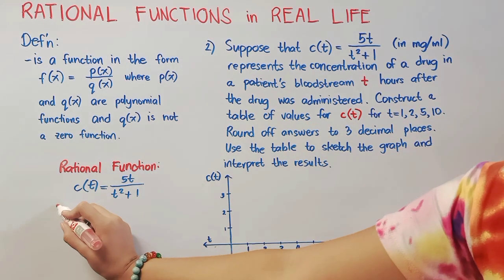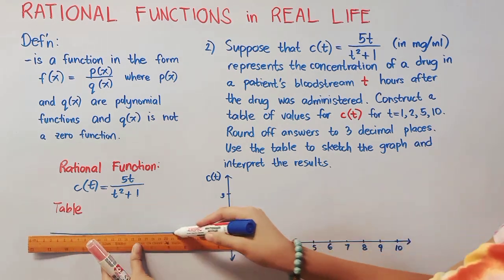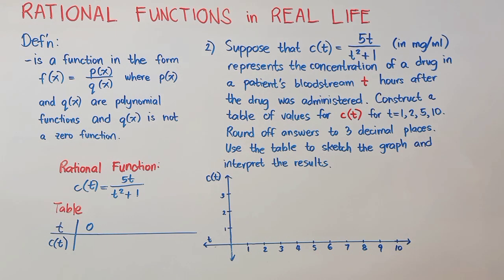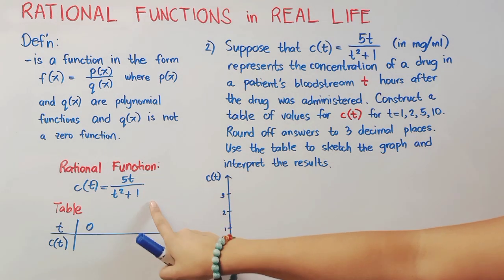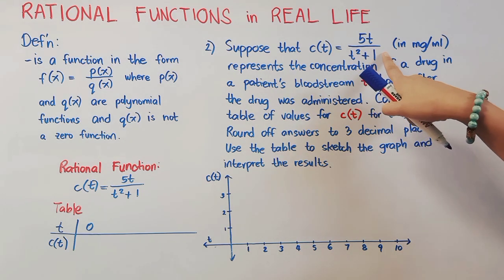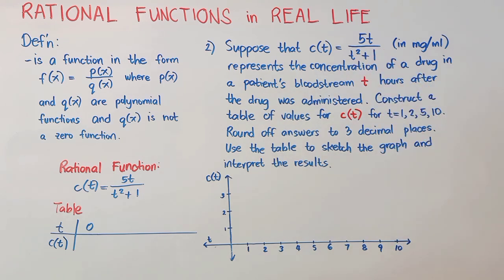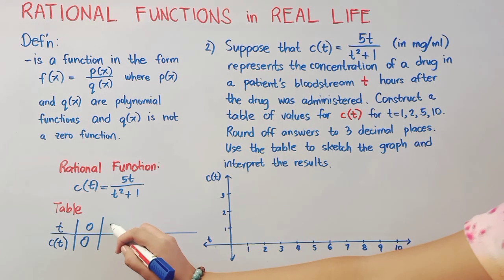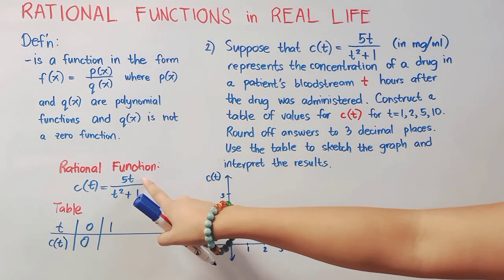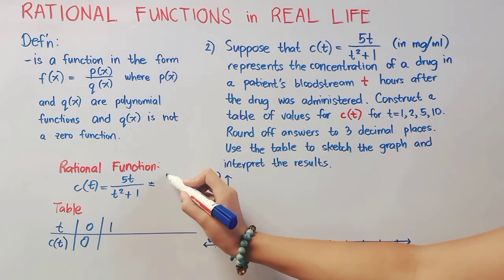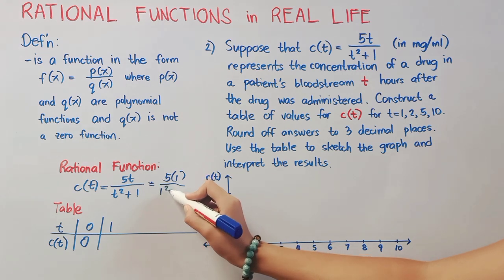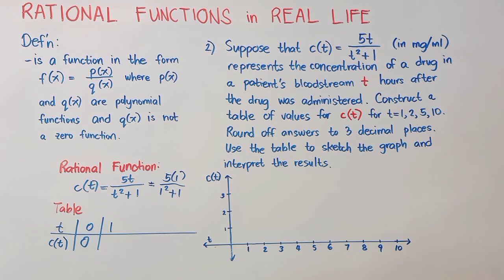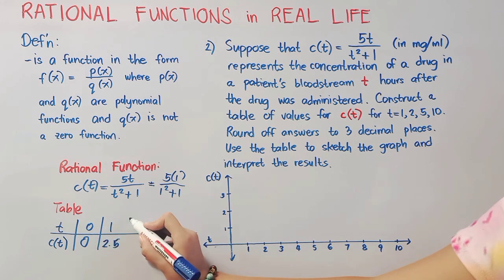Then, according to the given, we have to construct a table of values for c(t) where our t values are 1, 2, 5, and 10. However, we can start with t equals 0, since if we will substitute 0 to t, then it won't give us a denominator of 0. In fact, our denominator would be 0 squared plus 1, so we'll still have 1. Therefore, our c(t) here is 5 times 0 over 0 squared plus 1 is still equal to 0. Let's proceed to 1. Again, to get our c(t) here, we will simply substitute our value of t in this function. So, 5 times our t is 1 over our t is 1 again, so 1 squared plus 1. So, this is 5 divided by 1 squared plus 1 is 2, so we have 5 over 2 or 2.5 in decimal.